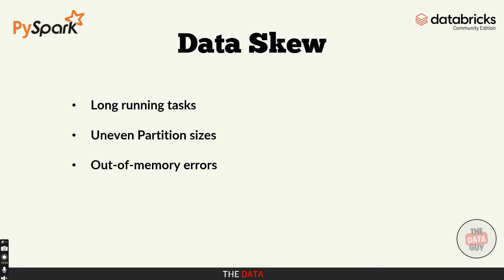You can detect data skew in a few ways. If some tasks in your Spark job are taking significantly longer than others, that's a sign of skew. If there are uneven partition sizes, you can use the df.rdd.glom() command to inspect the size of each partition — if you see one or more partitions with way more records than others, you have skew. And if your job is failing because a few partitions are running out of memory, that could also be due to skew. Once you detect skew, it's time to deal with it.